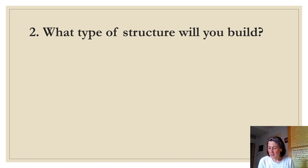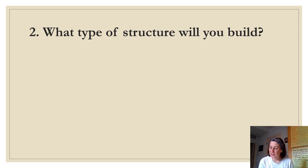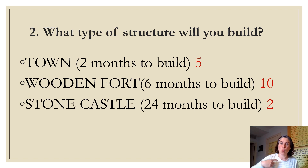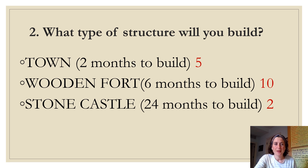Decision two reveal — what type of structure? The Jamestown colony decided that the wooden fort was the best choice. They built the fort in the shape of a triangle and put a cannon on each corner. They figured the stone castle would take way too long, and a town would be really hard to defend against attacks. Points: town gets 5, wooden fort gets 10, stone castle gets 2.